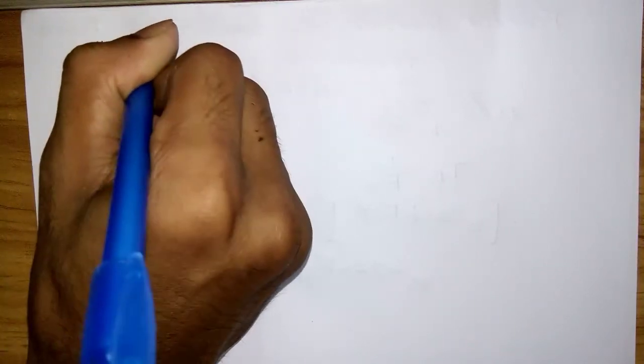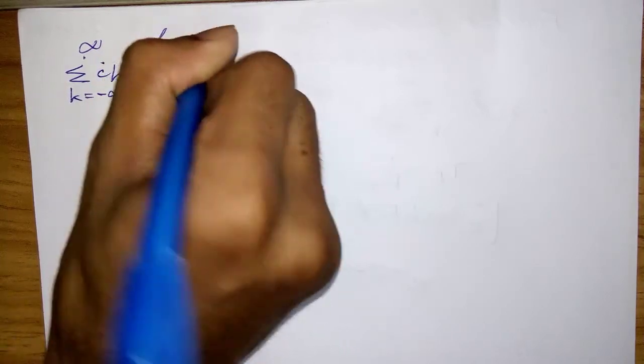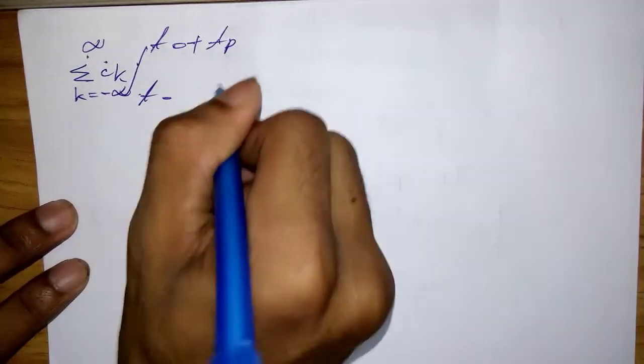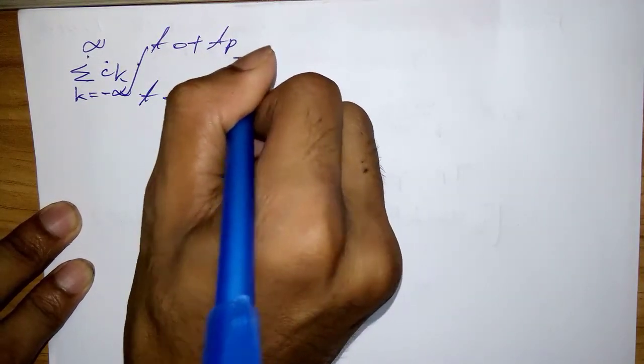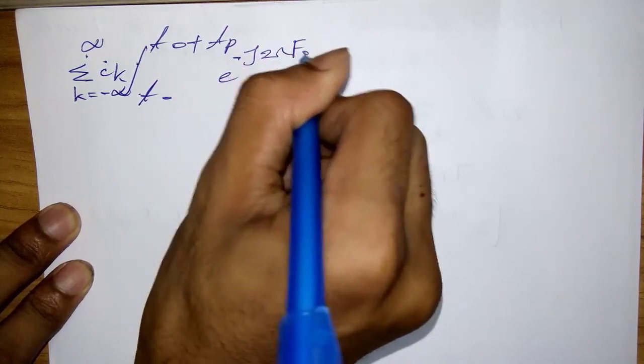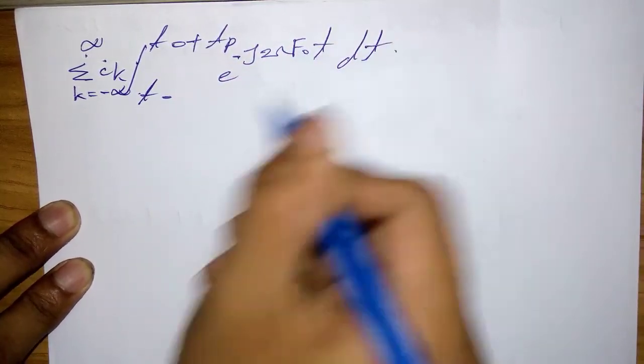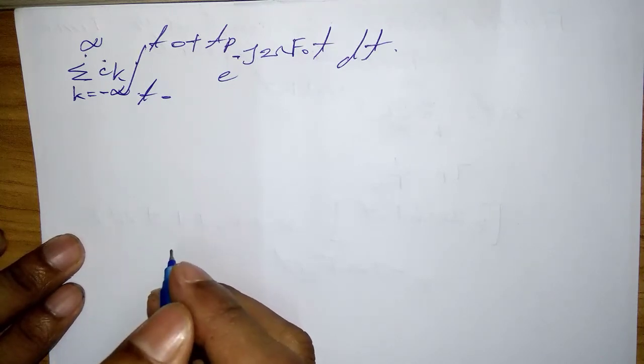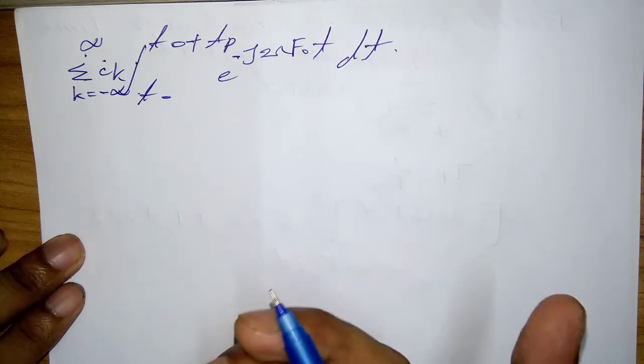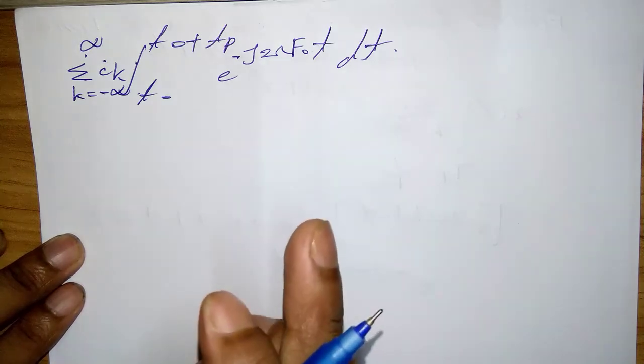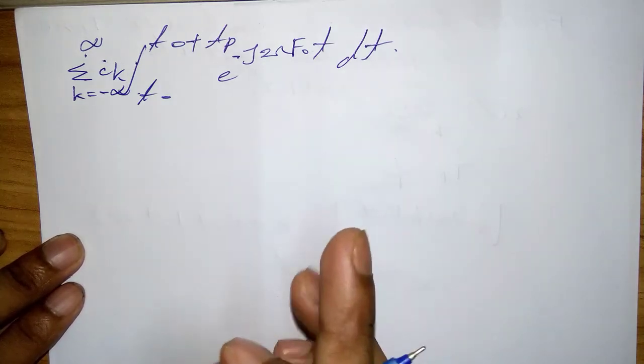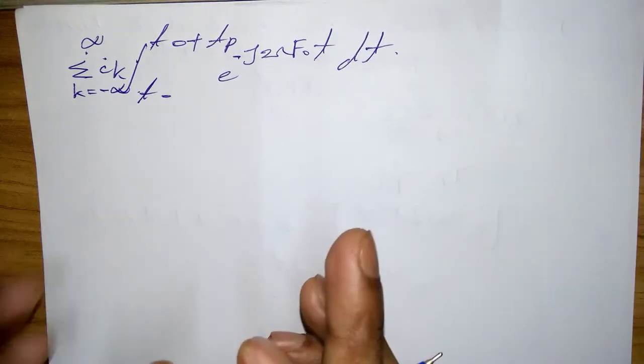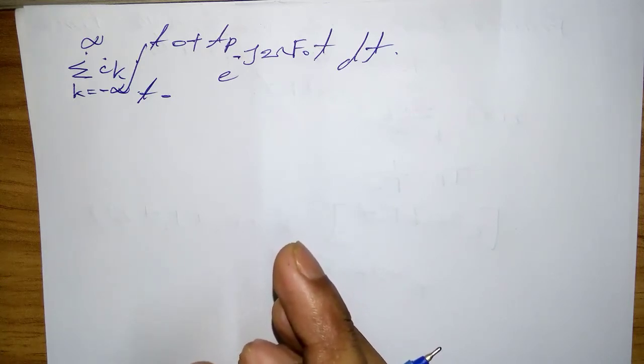integrated from t₀ to t₀+T_p of e^(-j2πf₀t) dt. To evaluate the integral on the right-hand side, we interchange the order of summation and integration.